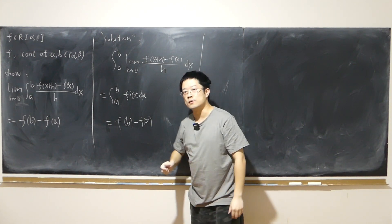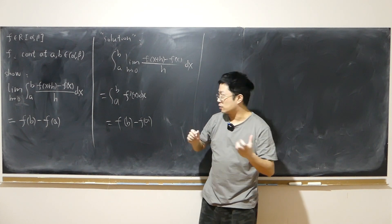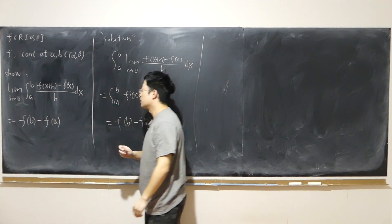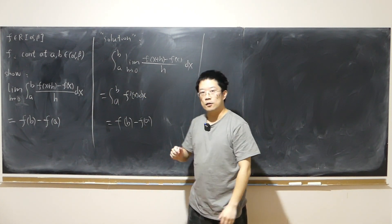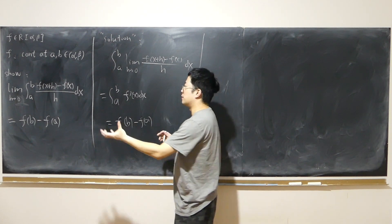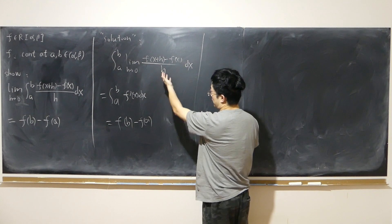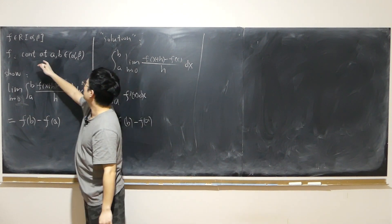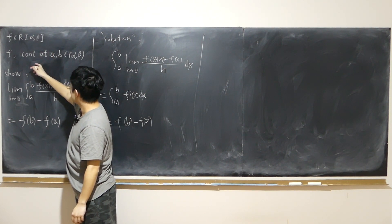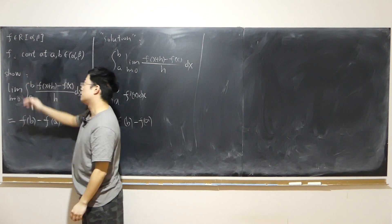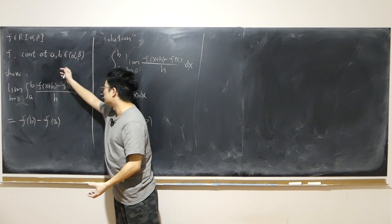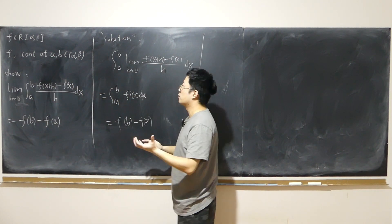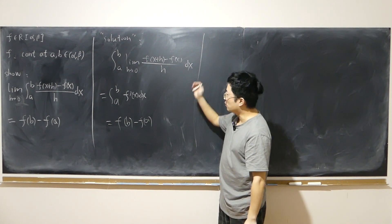The problem with this solution is: first, we don't know if the order of limit and integration is even switchable. Second, even if we can switch the order, we don't know if the derivative exists at x. We were only told the function is continuous — not everywhere, but only at a and b. The function is only Riemann integrable over the closed interval, not necessarily differentiable.